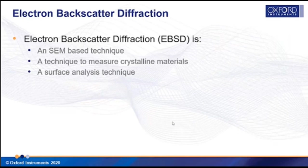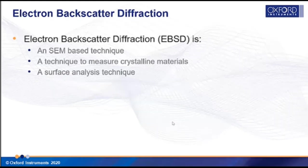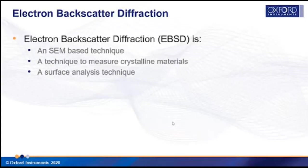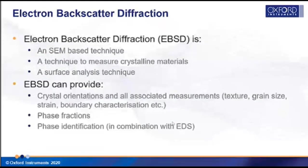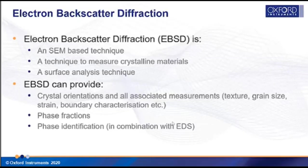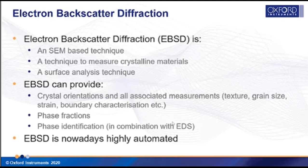The second technique we'll focus on is Electron Backscatter Diffraction, or EBSD — an SEM-based diffraction technique used on crystalline materials such as minerals, metals, and alloys. It's a surface analysis technique requiring very high quality polish and a flat sample — a higher polishing requirement than routine X-ray analysis. EBSD complements EDS very well because it gives information about crystal orientations, from which we can derive texture, crystallographic preferred orientation, grain size, strain, boundary characterization, and phase distribution.